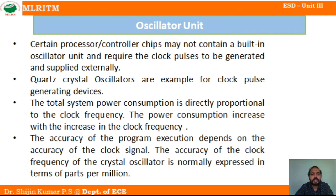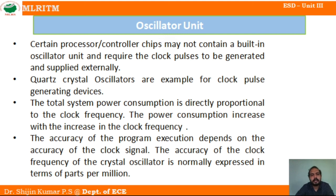The accuracy of a crystal oscillator is normally expressed in parts per million (PPM), which is the unit for expressing the accuracy of an oscillator unit in a microprocessor or microcontroller.